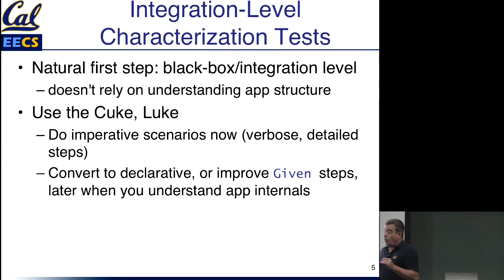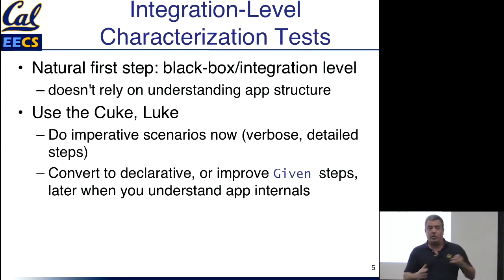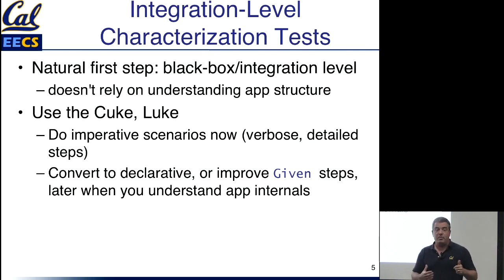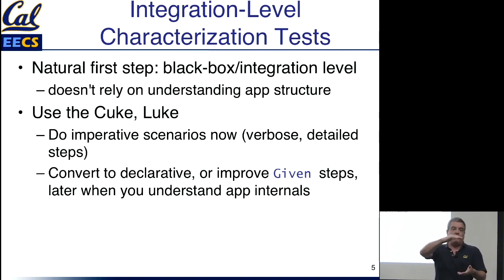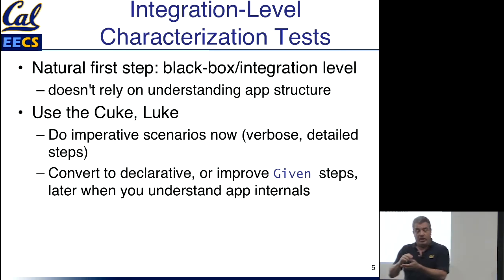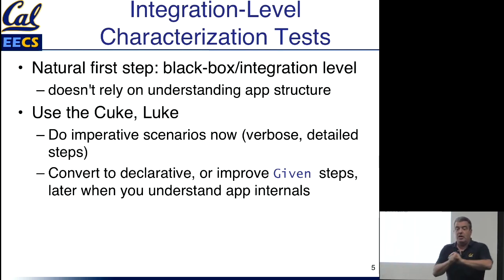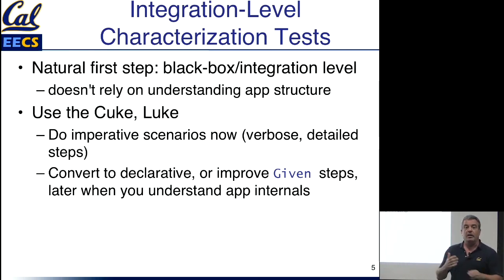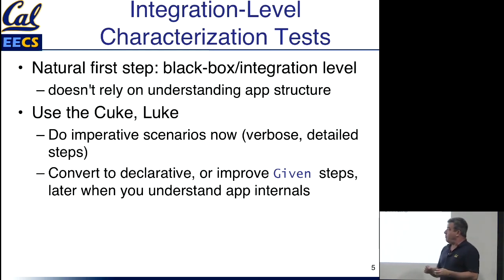For example, when doing Cucumber, we showed that if you have a background condition like 'a new movie exists,' there are at least two ways to cause that movie to exist. One is to go through the exact sequence of steps a human user would do — maybe seven or eight lines of Cucumber steps. Or, if you understand how the movie model works, you could have a single step definition that shoves a new movie model right into the database. Start with the first way because you know it works, and over time convert some steps to a more streamlined manner.